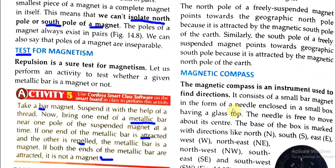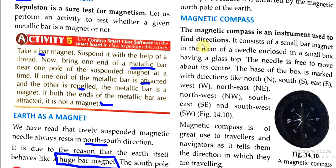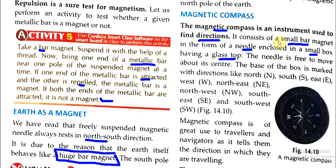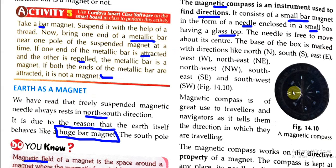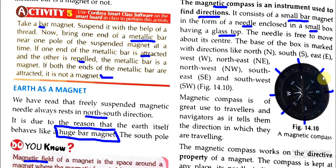Next we will see the magnetic compass. The magnetic compass is an instrument used to find directions. It has a needle which is free to move about its center. The base of the box is marked with directions: north, south, east, west, northeast, northwest, southeast, and southwest.